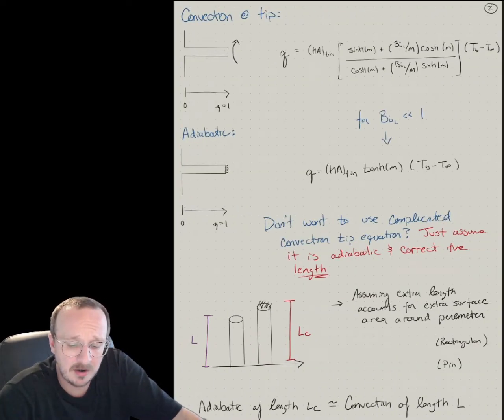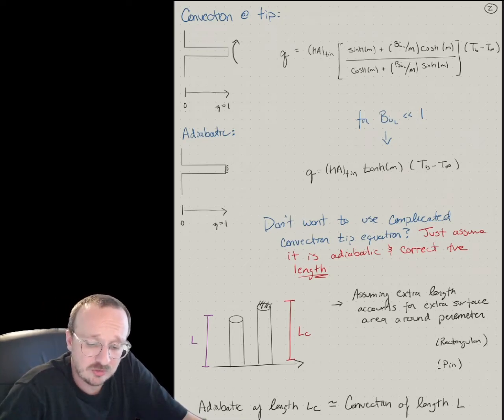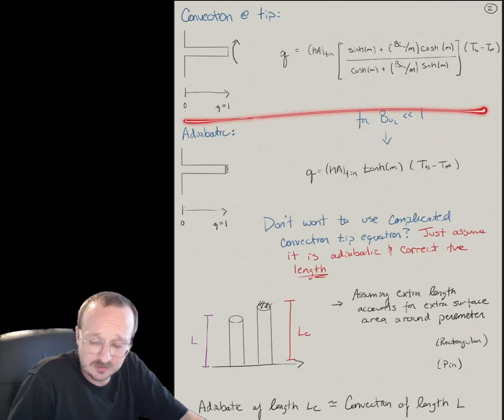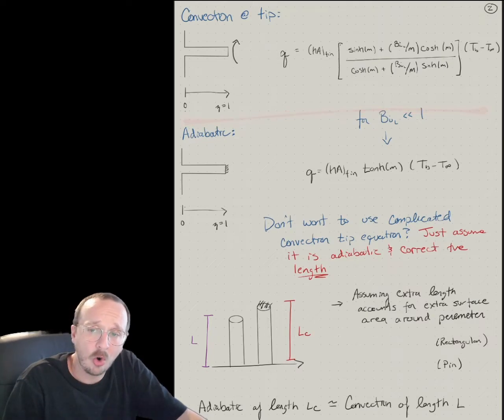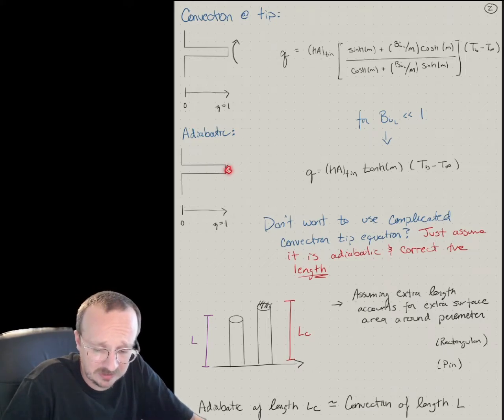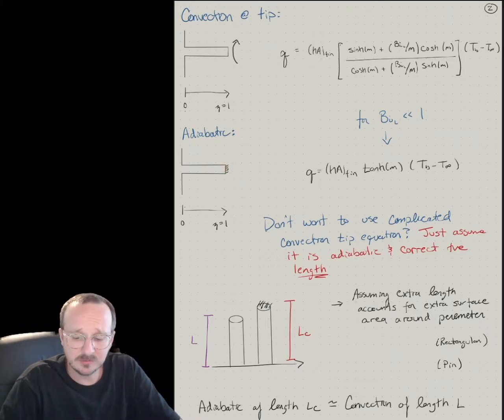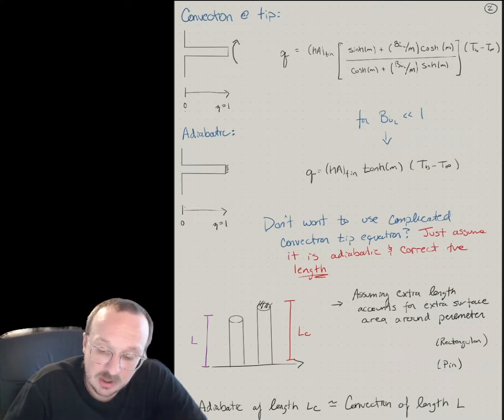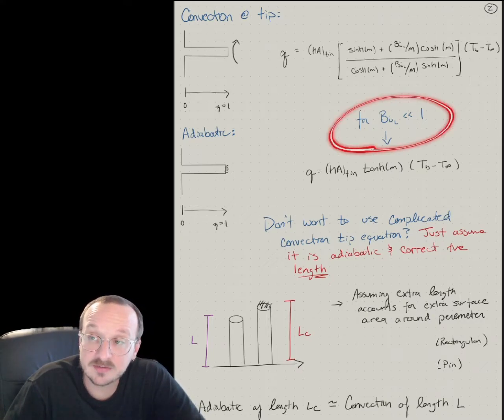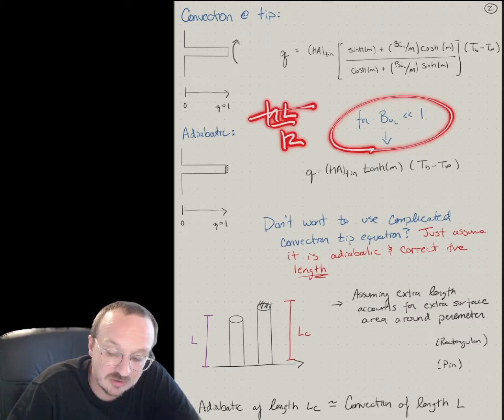And let's compare convection at the fin tip, which is what we're talking about here. This expression, which you can derive, or what we just talked about in a previous video is the adiabatic fin tip. But in an adiabatic fin tip, there's no heat loss from the fin. So the idea is, if your Biot number is much less than 1, meaning HL over K, so meaning you have poor convection.